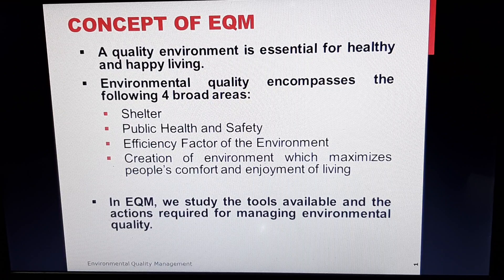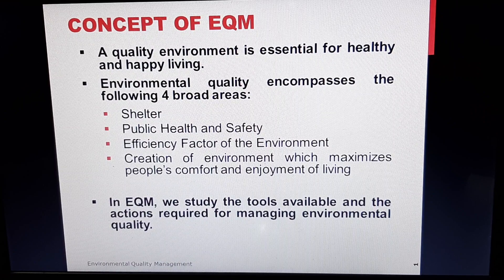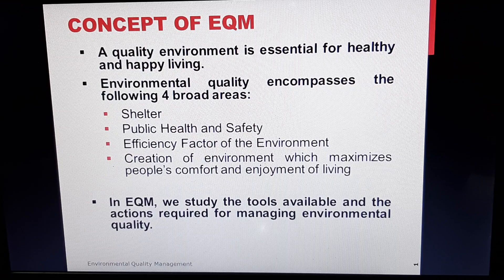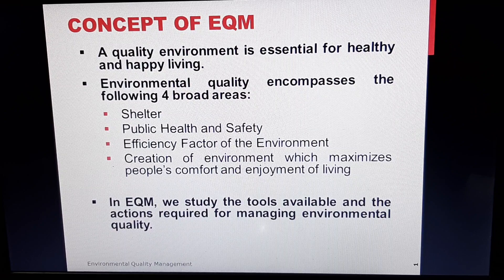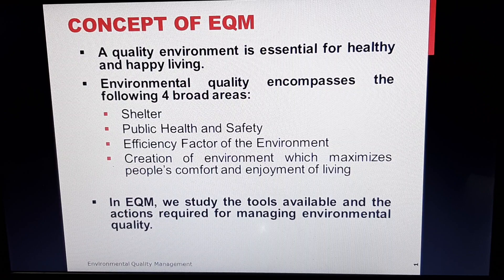The environmental quality encompasses the following four broad areas. Number one is shelter, which depends upon the quality and adequacy of residential, commercial and industrial buildings. Number two is public health and safety, which concerns the prevention of diseases, accidents and pollution of air, water, soil, etc.